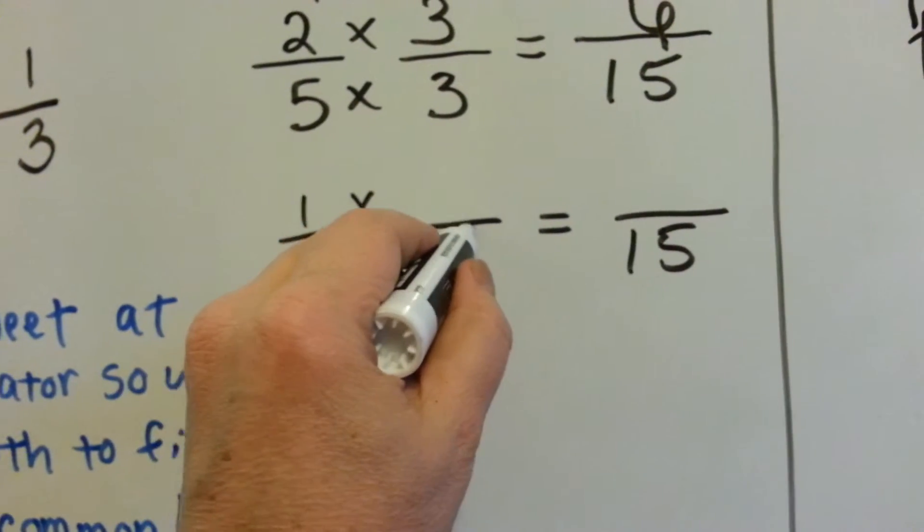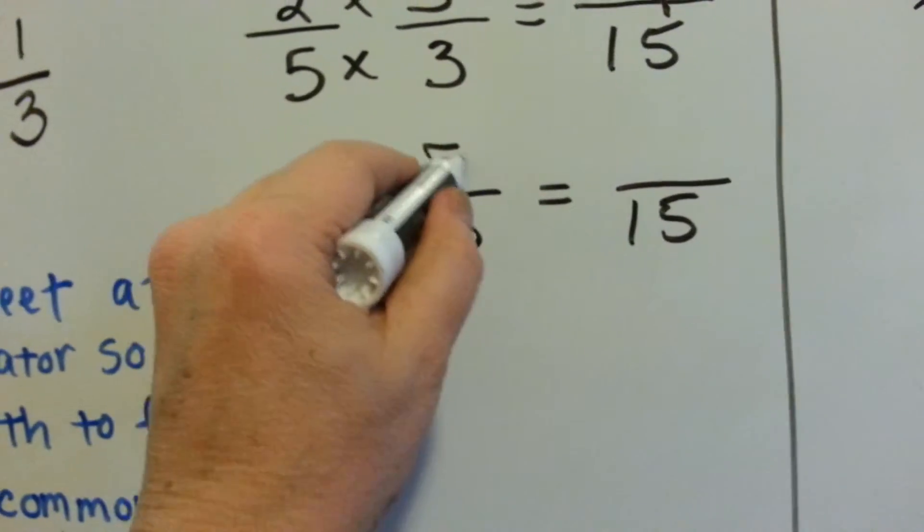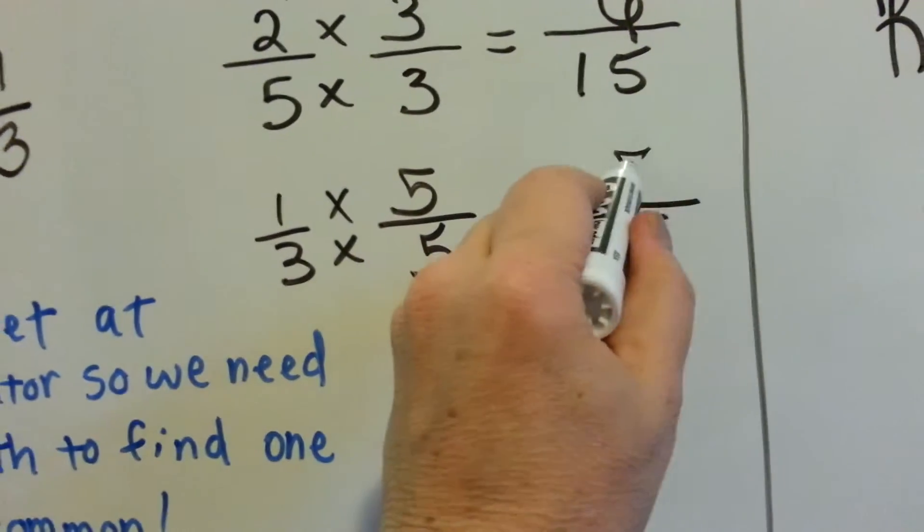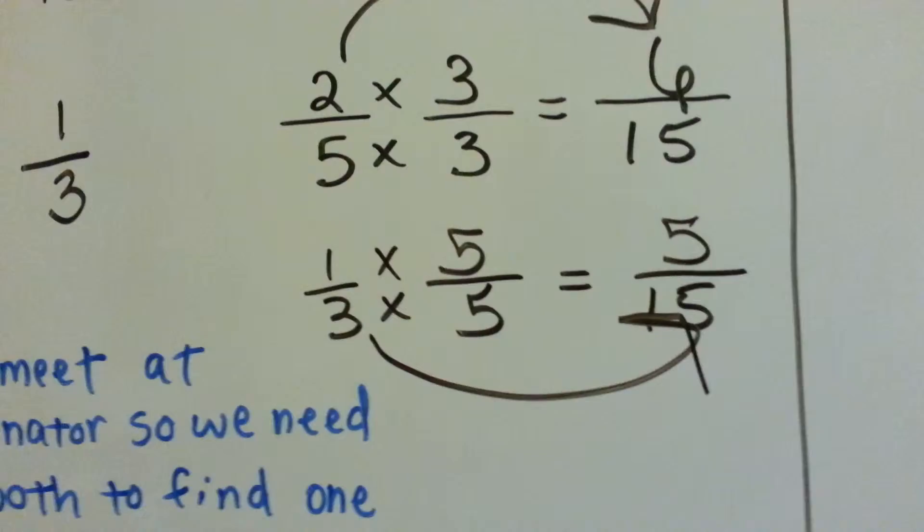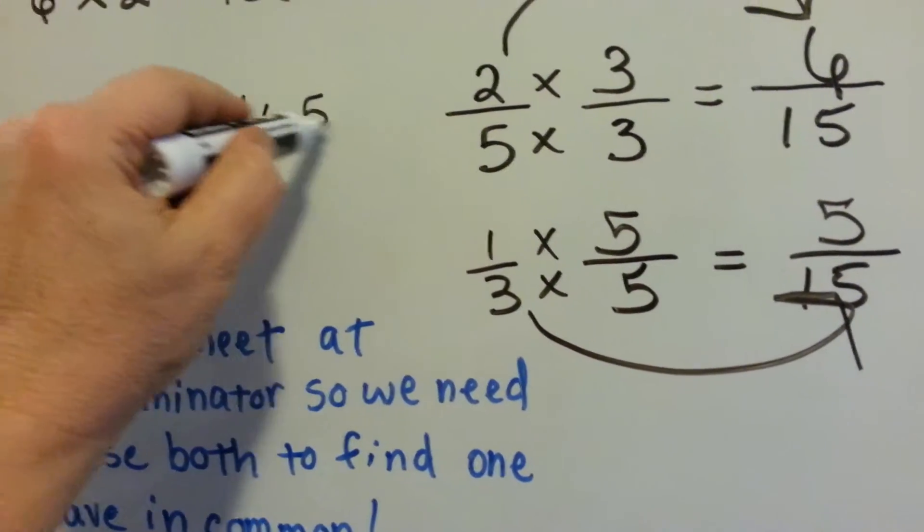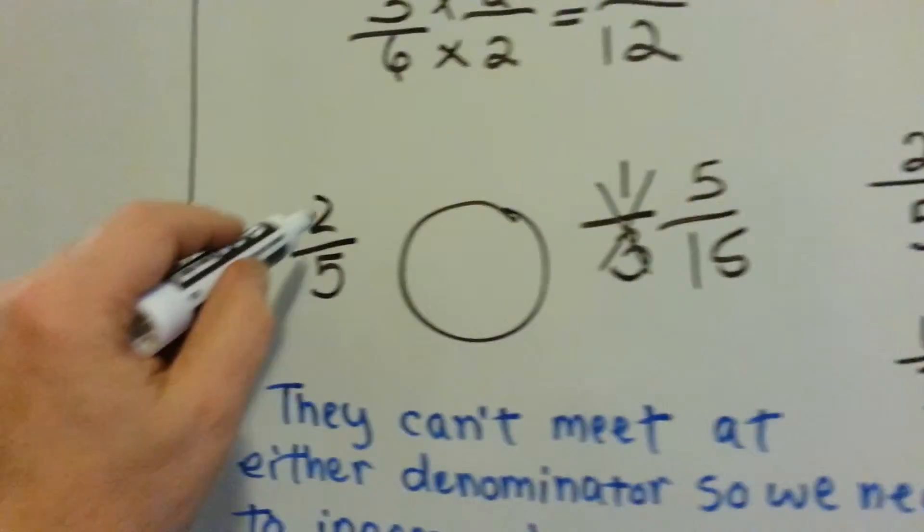What can we multiply 3 times to get to 15? 3 times 5. The 1 gets jealous, he wants to be multiplied by 5. 1 times 5 is 5. And the 1 third now becomes 5 fifteenths.